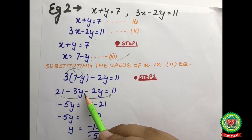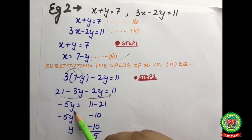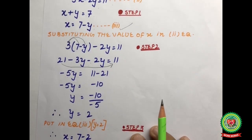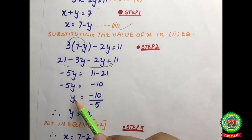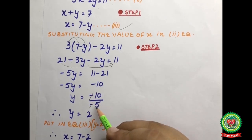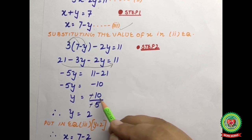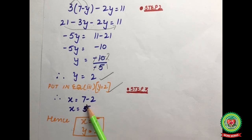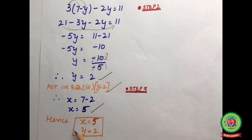On substituting x equals 7 minus y into equation number 2: 3(7 minus y) minus 2y equals 11, giving 21 minus 3y minus 2y equals 11. Shifting 21 to the other side: minus 5y equals 11 minus 21, so minus 5y equals minus 10. Therefore y equals minus 10 divided by minus 5, which gives y equals 2. Substituting y equals 2 into equation number 3: x equals 7 minus 2, so x equals 5. Hence x equals 5 and y equals 2.